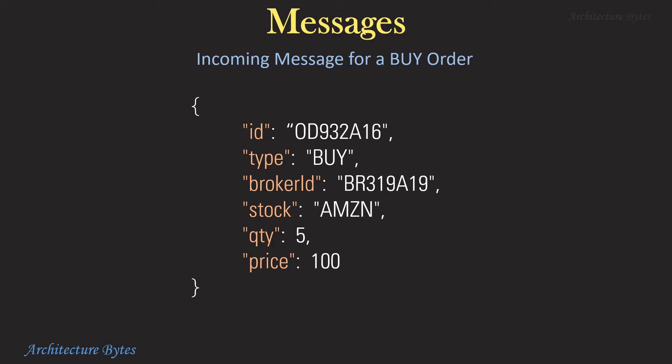This is an example of an incoming JSON message for a buy order. A sell order message will be similar, where type will be sell. ID is a unique order ID for that order. Broker ID is an identifier for the broker sending this message. Stock has the stock name for the transaction. Quantity is the number of shares to transact. And price is the max price a customer is willing to pay for the stocks in case of a buy order, and the minimum price at which a customer is willing to sell the stocks in case of a sell order.